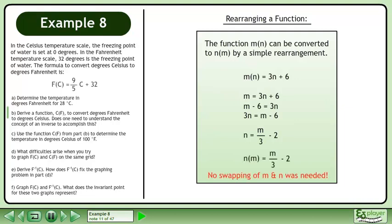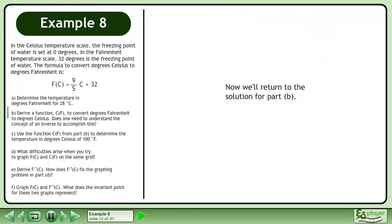We can rewrite n as n since m over 3 minus 2 is a function. We did not swap variables at any point in the rearrangement. Now we'll return to the solution for Part B.